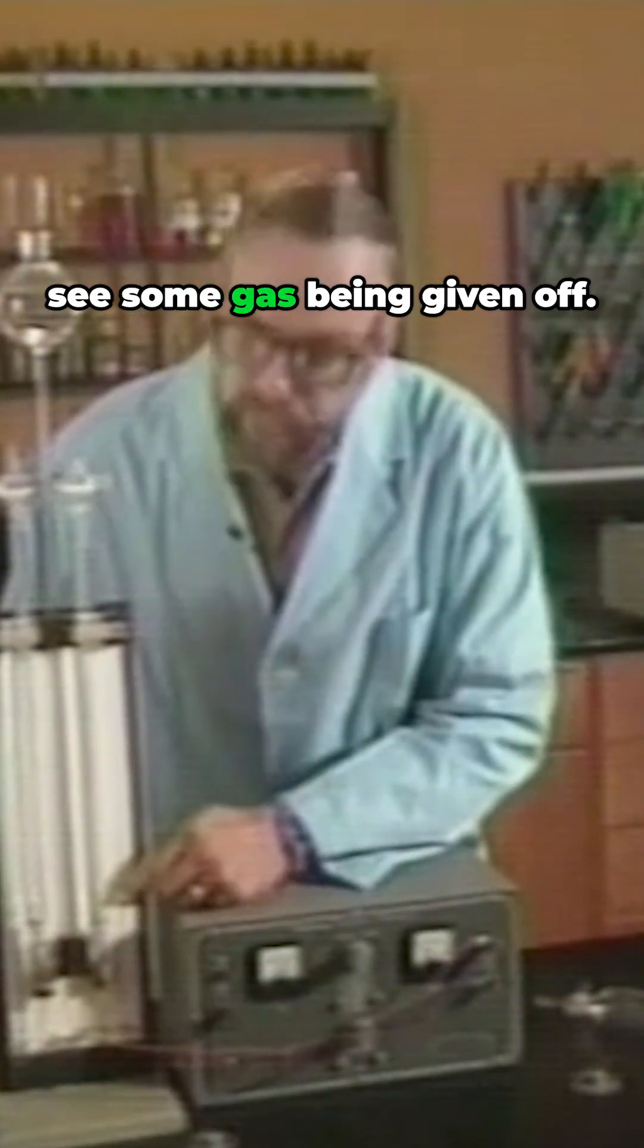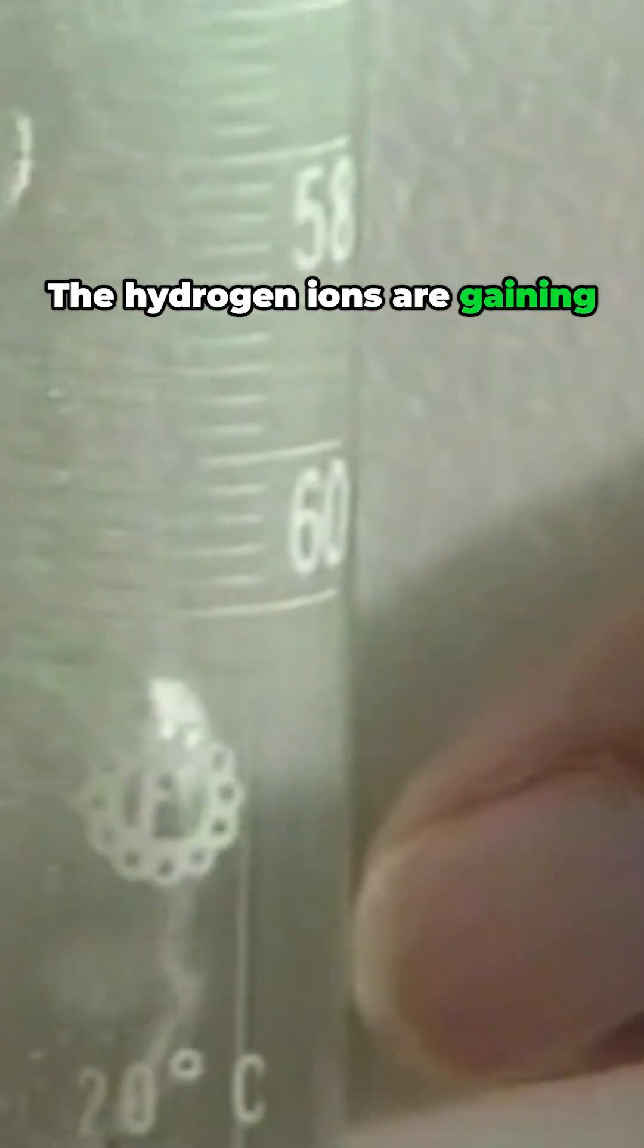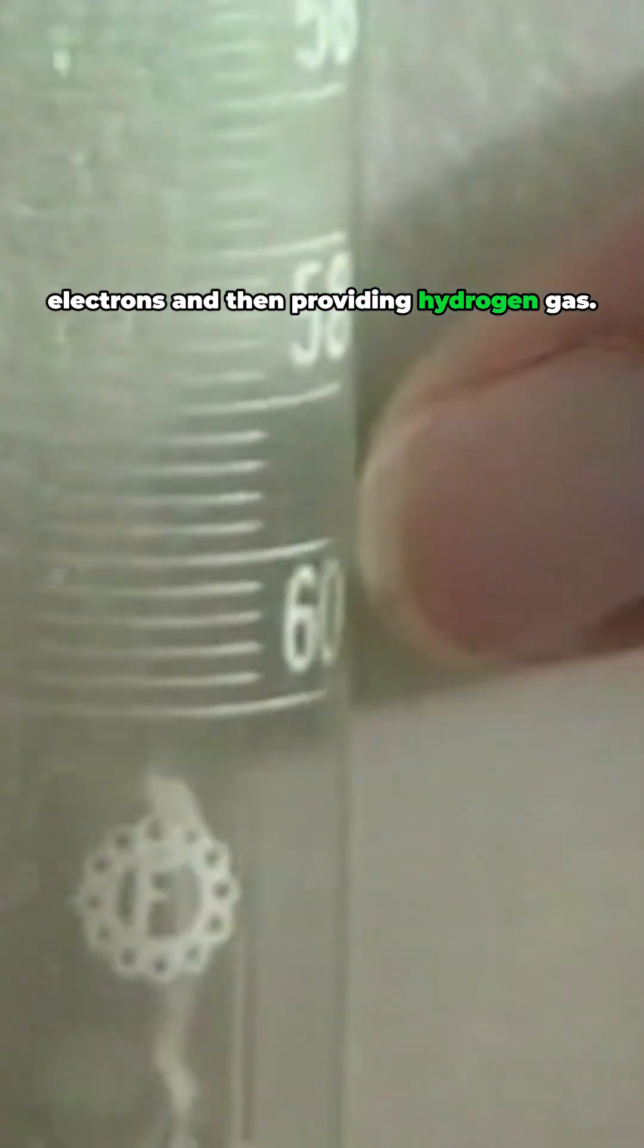At the negative electrode, we see some gas being given out. That's hydrogen gas. The hydrogen ions are gaining electrons and then producing hydrogen gas.